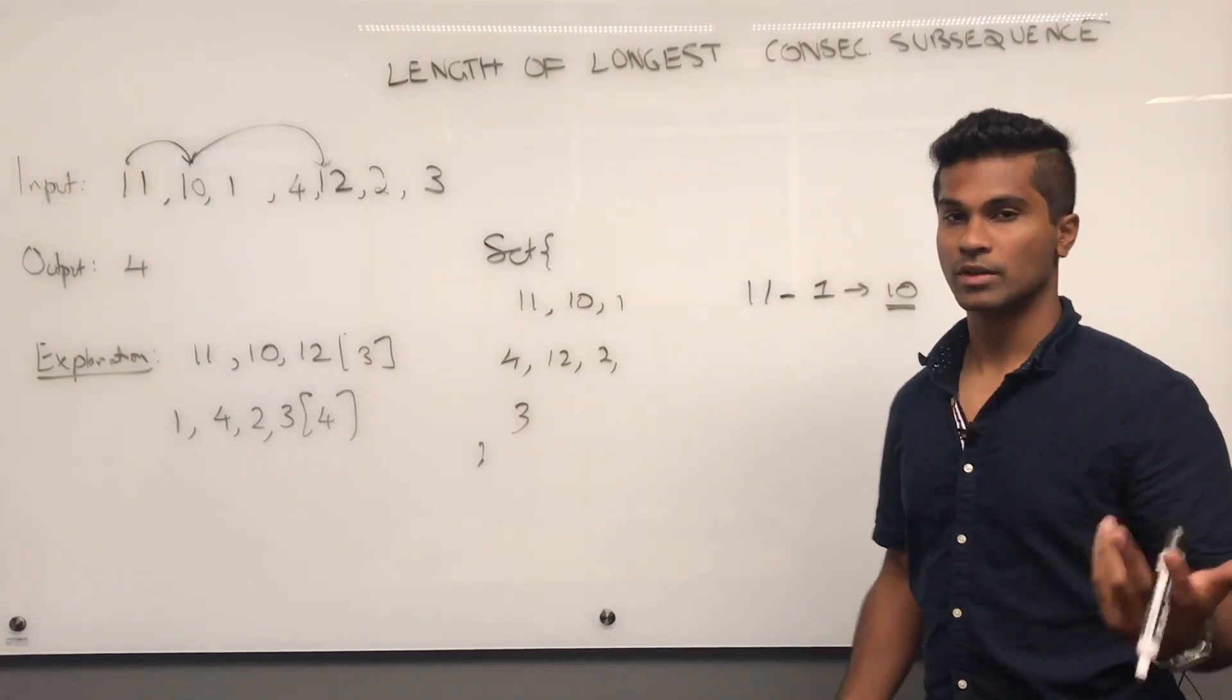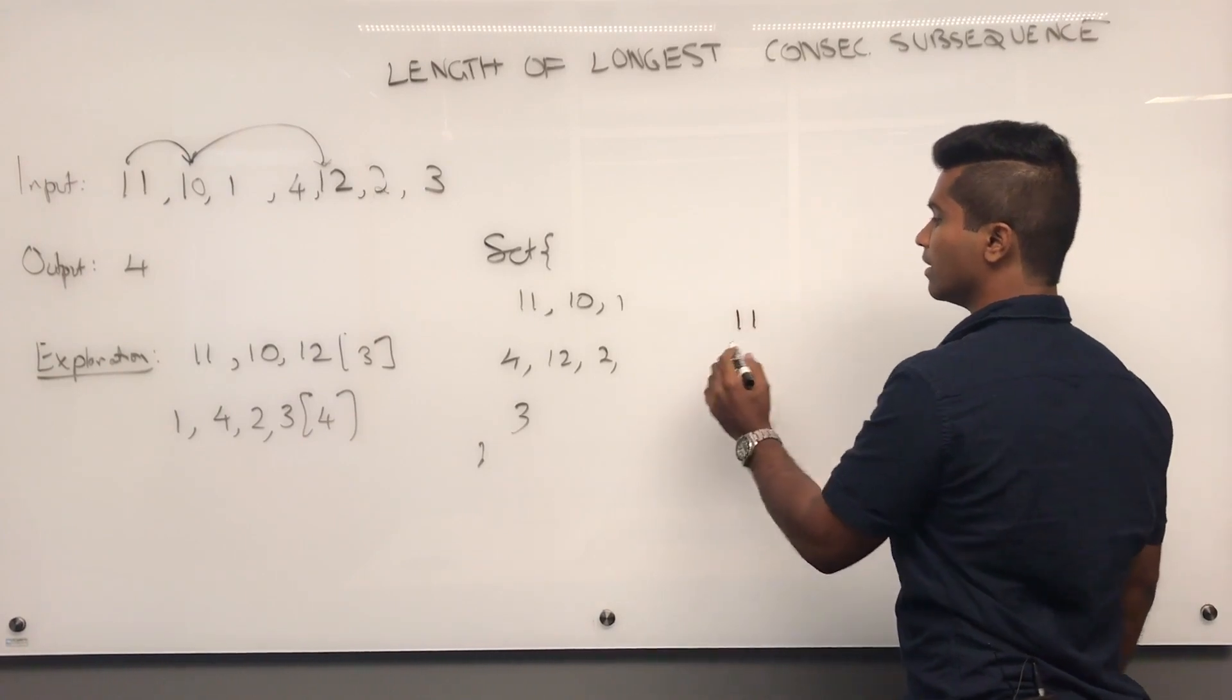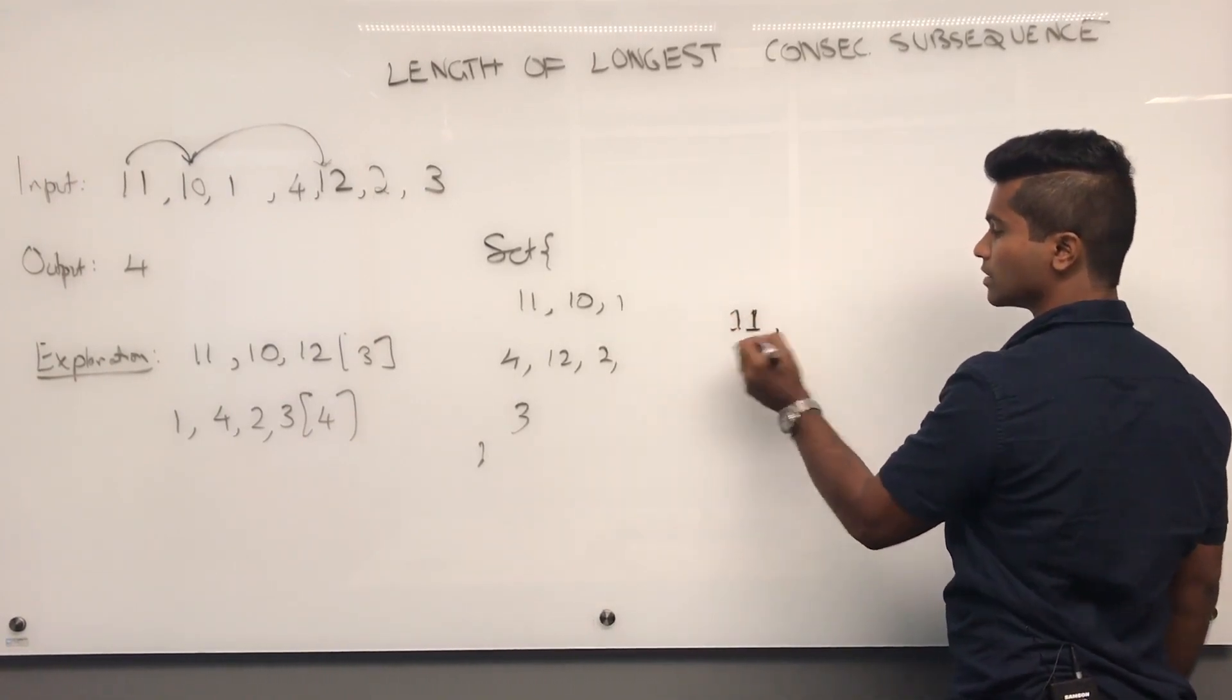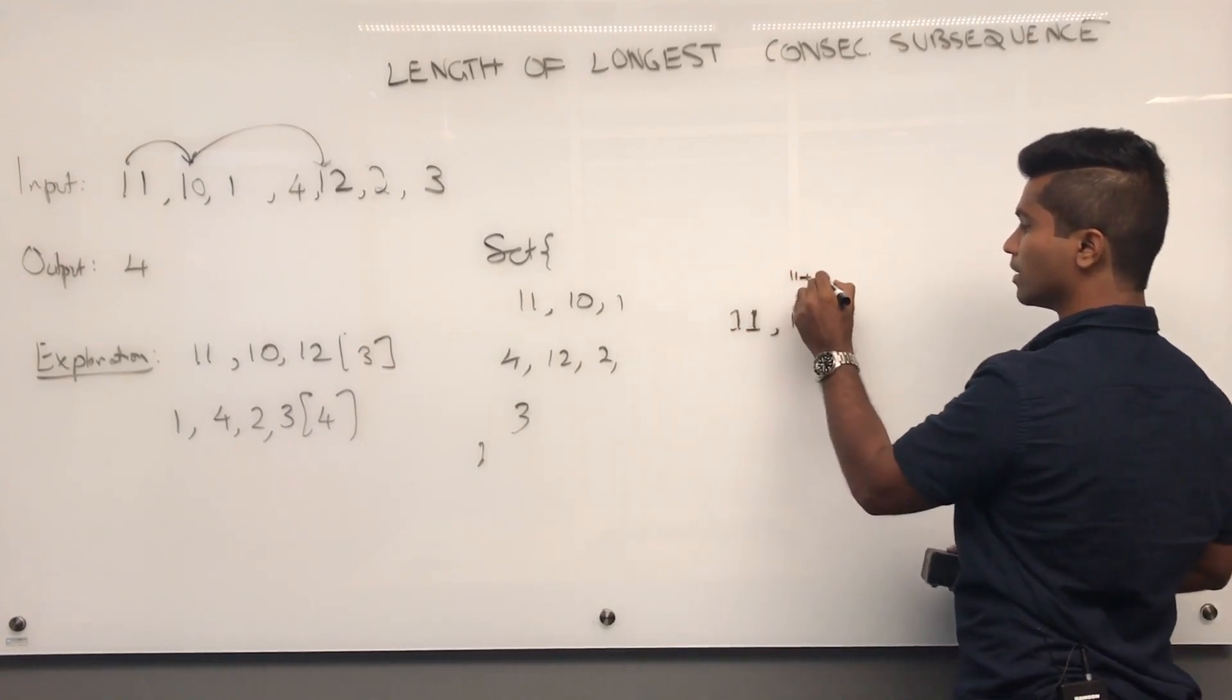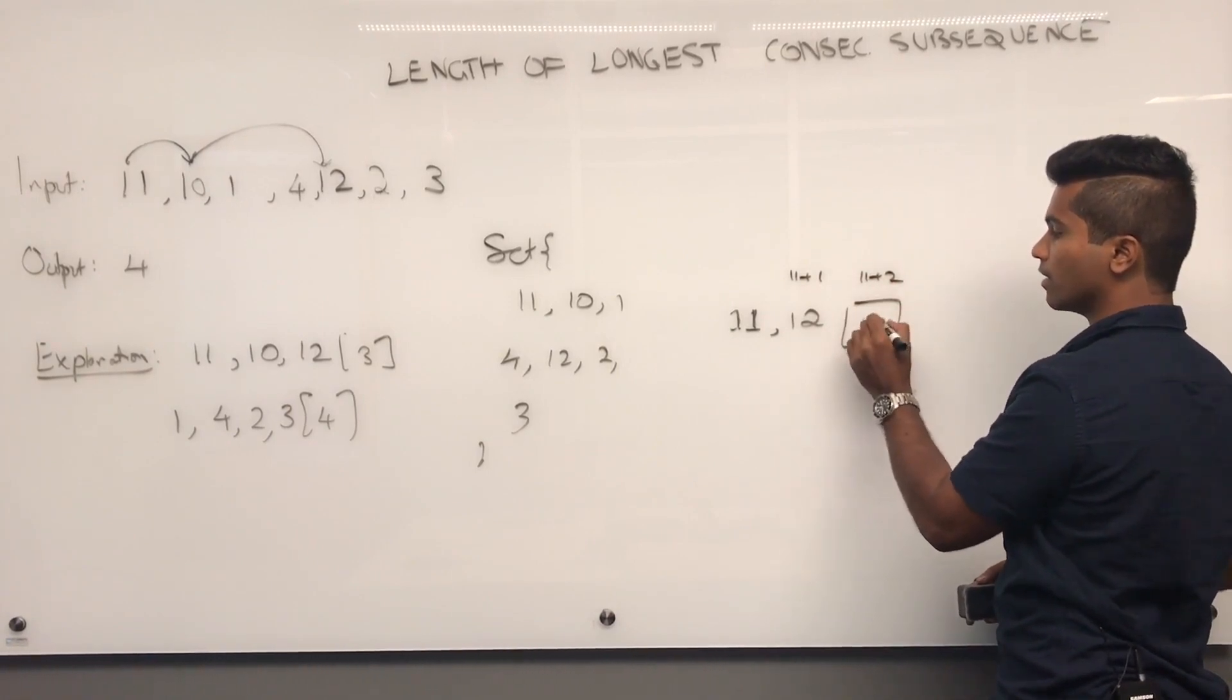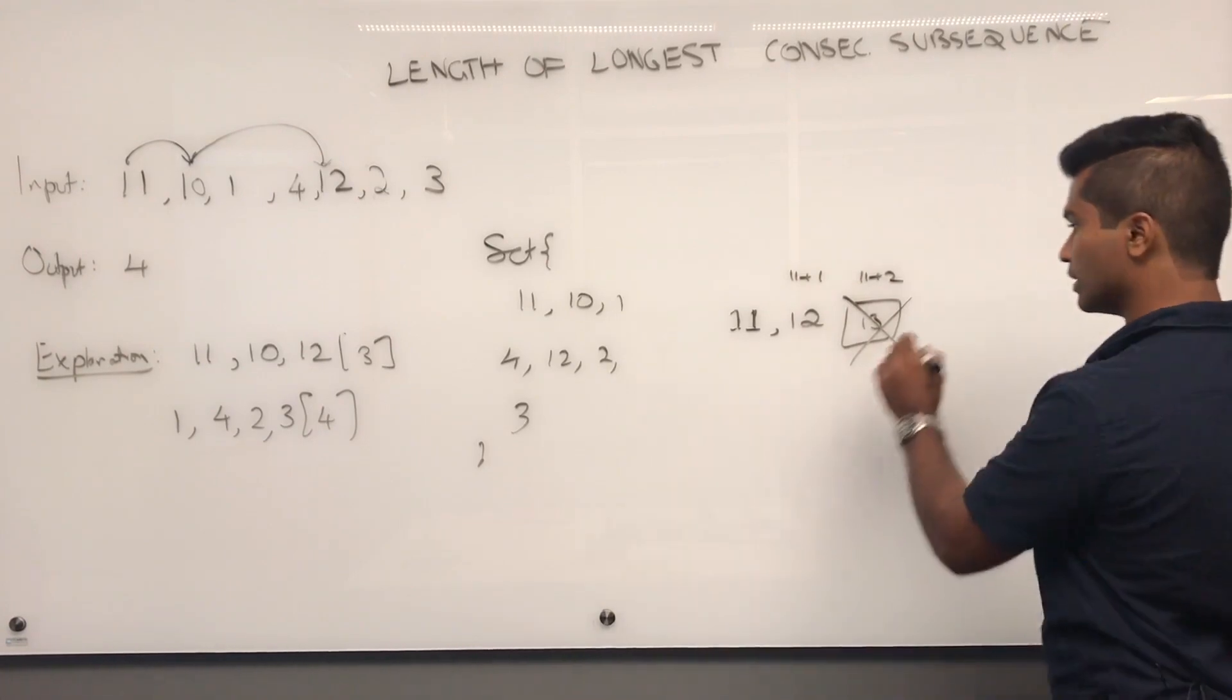Because let's see what happens if 11 tries building itself. 11 is going to see, say 11 starts the subsequence. It's going to see it has 12, right? 11, which is 11 plus 1. But 11 plus 2, 13 is not there. So, the length of this, if 11 starts it, is only going to be 2.